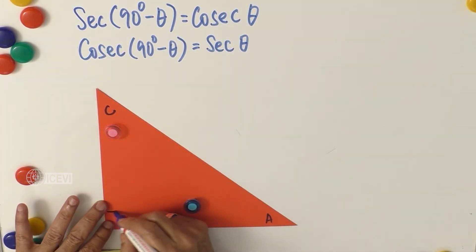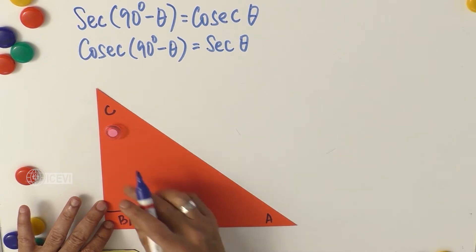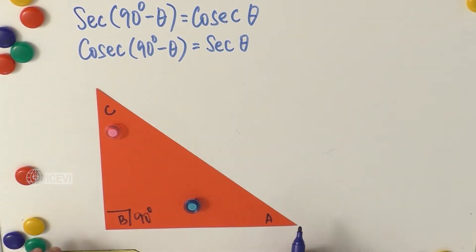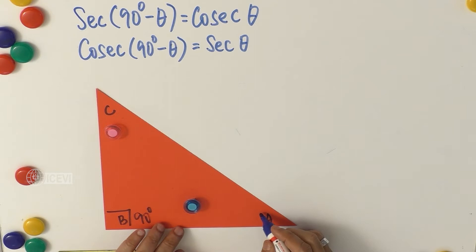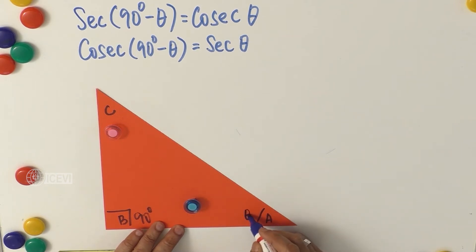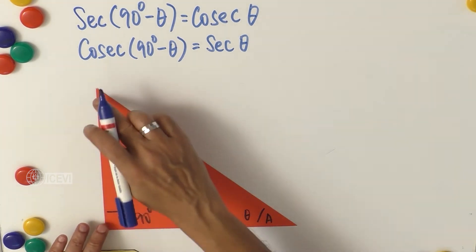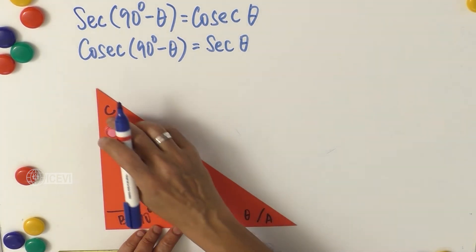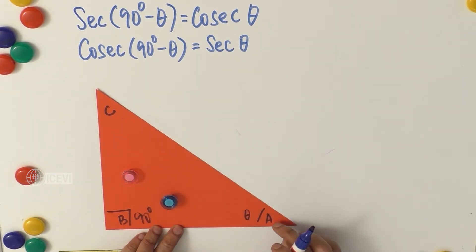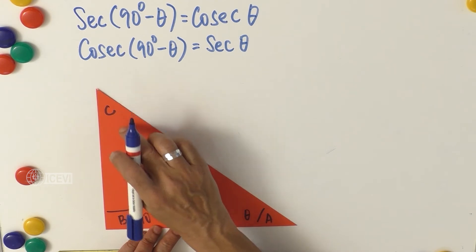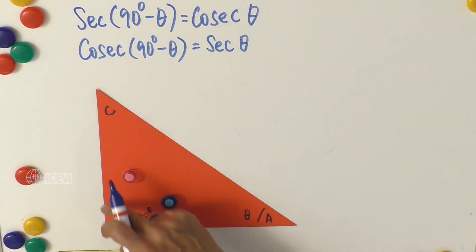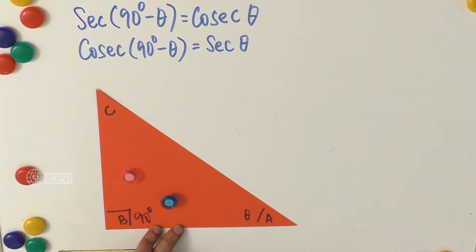Let us take a triangle ABC with angle B as 90 degrees — this is a right angle triangle. We have to find secant theta and cosecant theta. We take angle A as the reference angle theta. We do not know the exact measurements of angle A and angle C, but we know that angle A and angle C together equal 90 degrees.